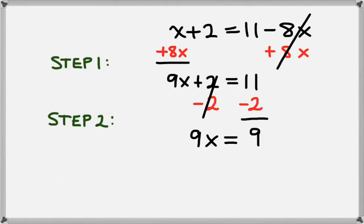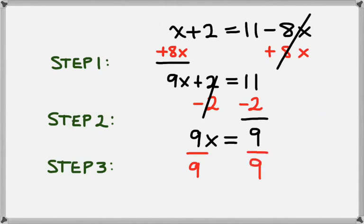Finally, we want to get x by itself. It's multiplied by 9, so what we need to do is divide by 9. We'll do that on the right hand side as well. On the left, that leaves us with x, and on the right, that leaves us with 9 divided by 9, which is 1. So our final answer is x equals 1.